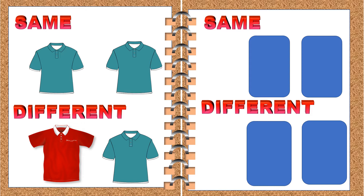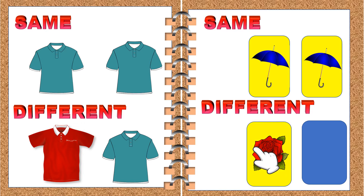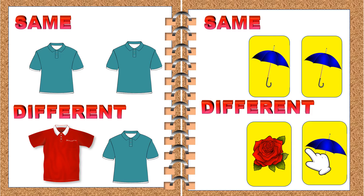Let's see another example. This is an umbrella. This is also an umbrella. These two cards have the same picture, so they are same. This is a rose. This is an umbrella. So both the cards are different.